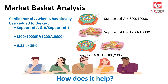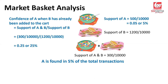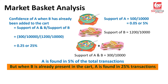We get that — but how does it help? Please note: this confidence of A given B that we are talking about is the same as the conditional probability — probability of A given B. Now what we need to analyze is what was the support of A. The support of A in this case was about 5%, or 0.05. Support of A being 5% means A is found in 5% of the total transactions. And then what does the confidence tell us? Confidence says when B is already present in the cart, A is found in 25% of the transactions.